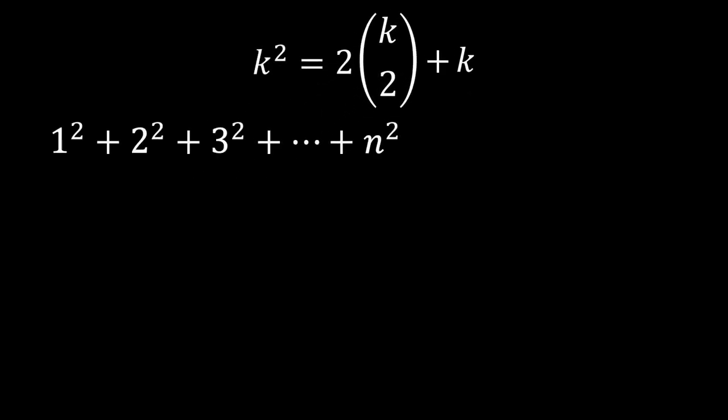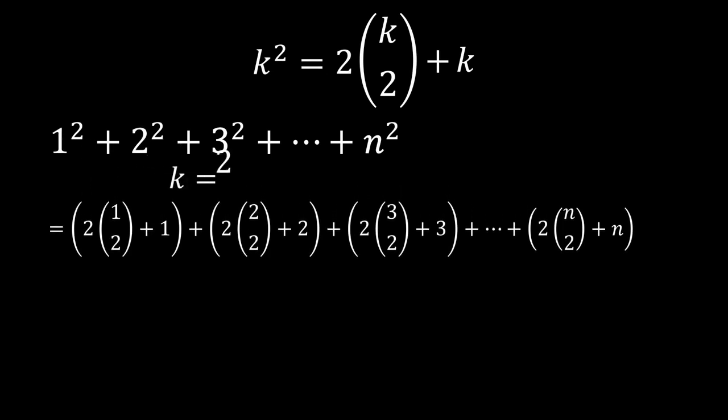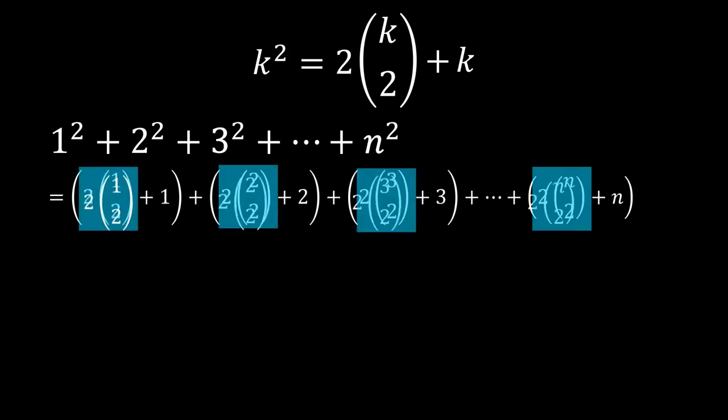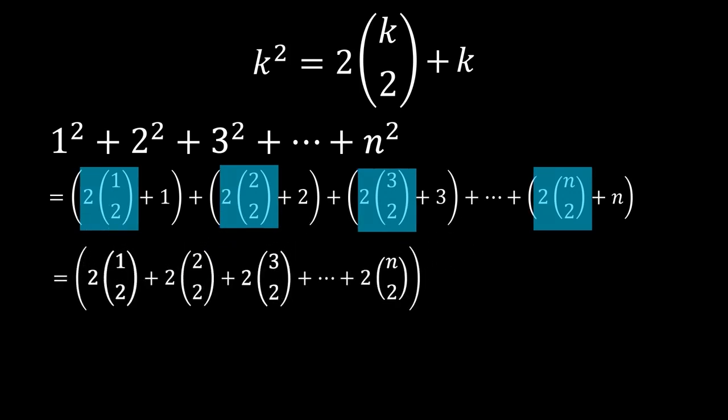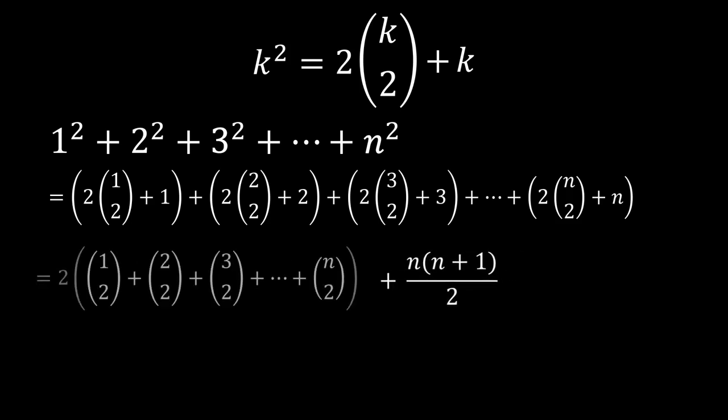Now repeatedly applying this identity for values of k from 1 to n, we can separate terms out - terms with a combination and terms without. We can simplify the sum of natural numbers to be n times n plus 1 over 2 and factor out the 2 in the sum of combinations.